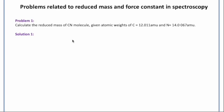Numericals related to spectroscopic technique. We have a problem over here. It says calculate the reduced mass of CN molecule given that the atomic weight of carbon is 12.011 amu and that for nitrogen it is 14.0067 amu.